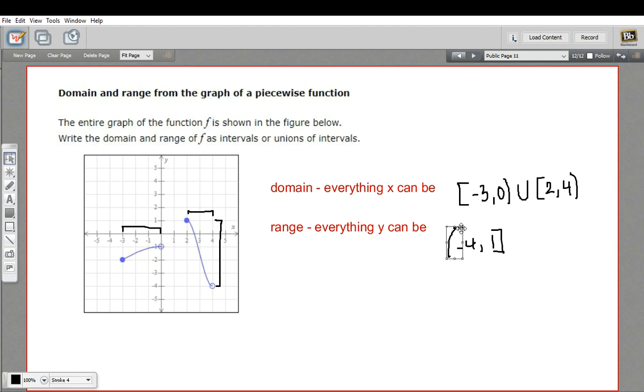So that, actually, let me write that bracket a little bit better. So that is our range, negative 4 to 1. And that is how to write the domain and range of a piecewise function in interval notation.